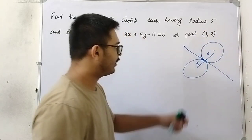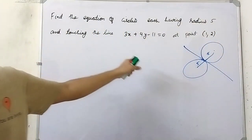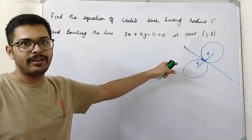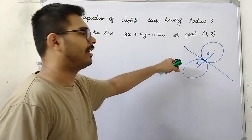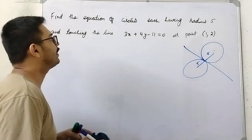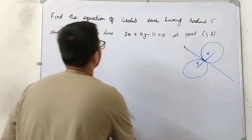The radius is given. To find the equation of a circle, you need to get the center — the coordinate of the center. How will you get the coordinate of the center?